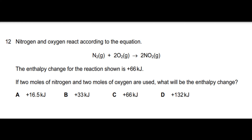Nitrogen and oxygen react according to the given reaction, with an enthalpy change of +66 kJ. If 2 moles of nitrogen and 2 moles of oxygen are used, what will be the enthalpy change? The concept of limiting reactant applies here. The original equation already uses 2 moles of oxygen producing +66 kJ of energy. Increasing the amount of nitrogen while keeping oxygen at 2 moles means oxygen is the limiting reactant, so no additional reaction occurs. The enthalpy change will remain the same, so the answer is C.